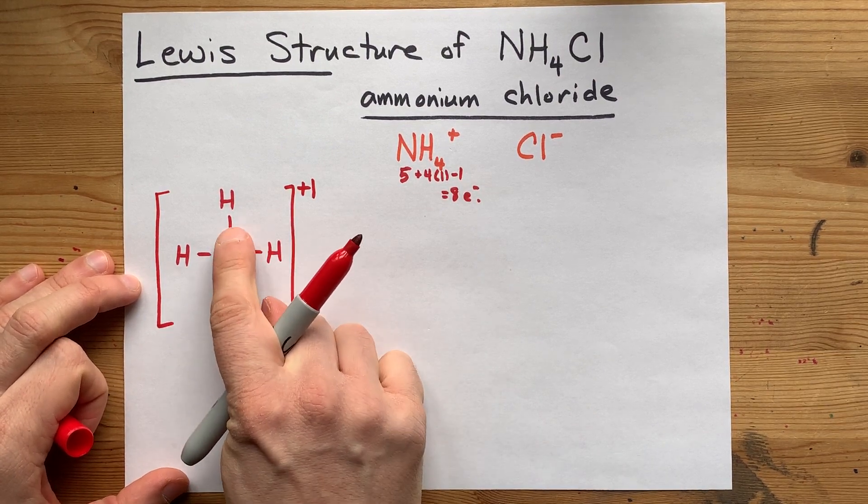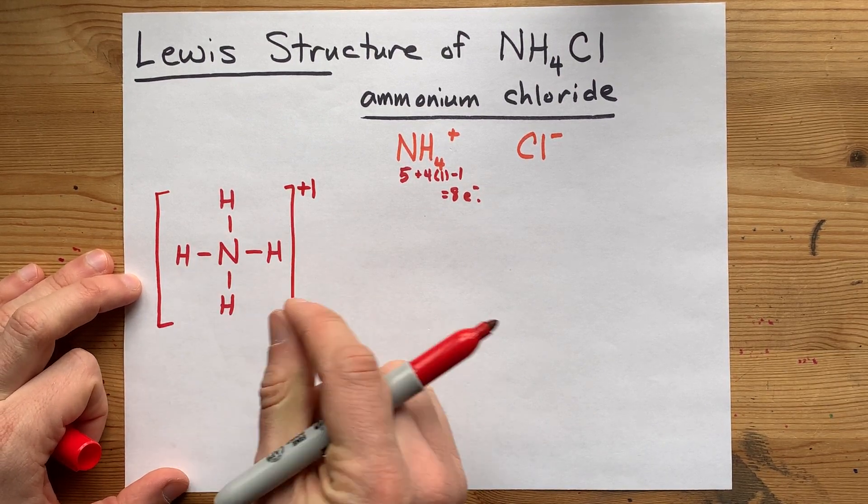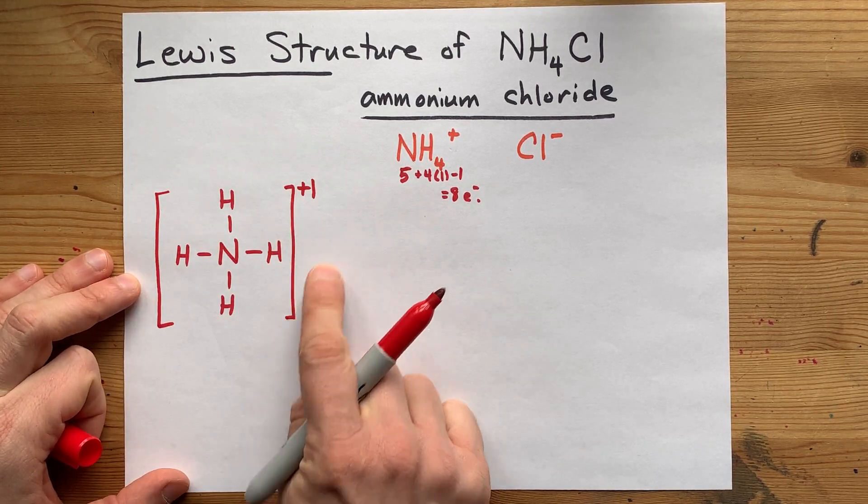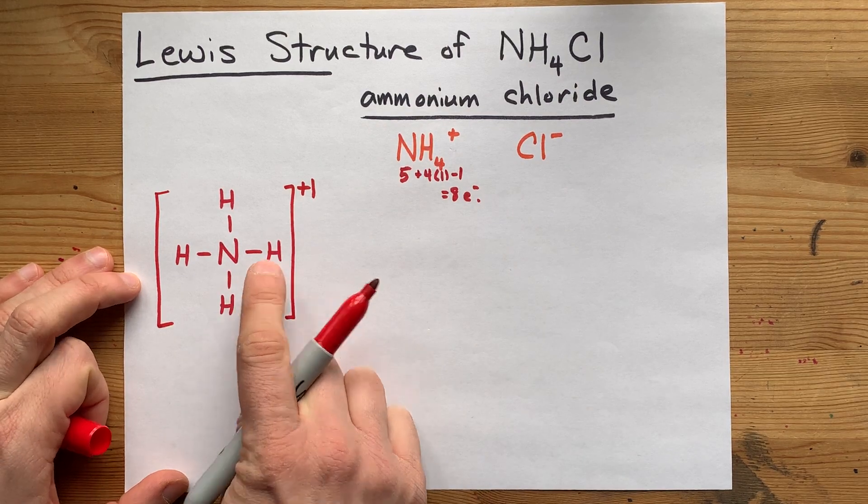One, two, three, four, five, six, seven, eight electrons shown. One nitrogen connected to four hydrogens. This is the Lewis structure for the ammonium ion.